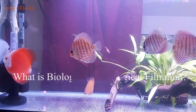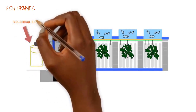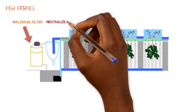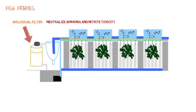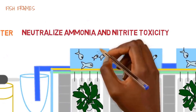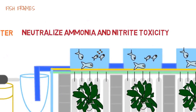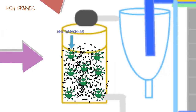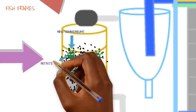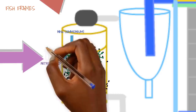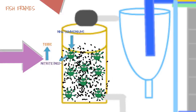The biological filter, sometimes called a biofilter, is a filter containing porous media that allows water to pass through it. This filter media serves as a home for aerobic nitrifying bacteria that break down fish waste to keep the environment safe and non-toxic. Chemical filtration is a process by which chemical additives remove dissolved wastes from the water; the most common method uses activated carbon.